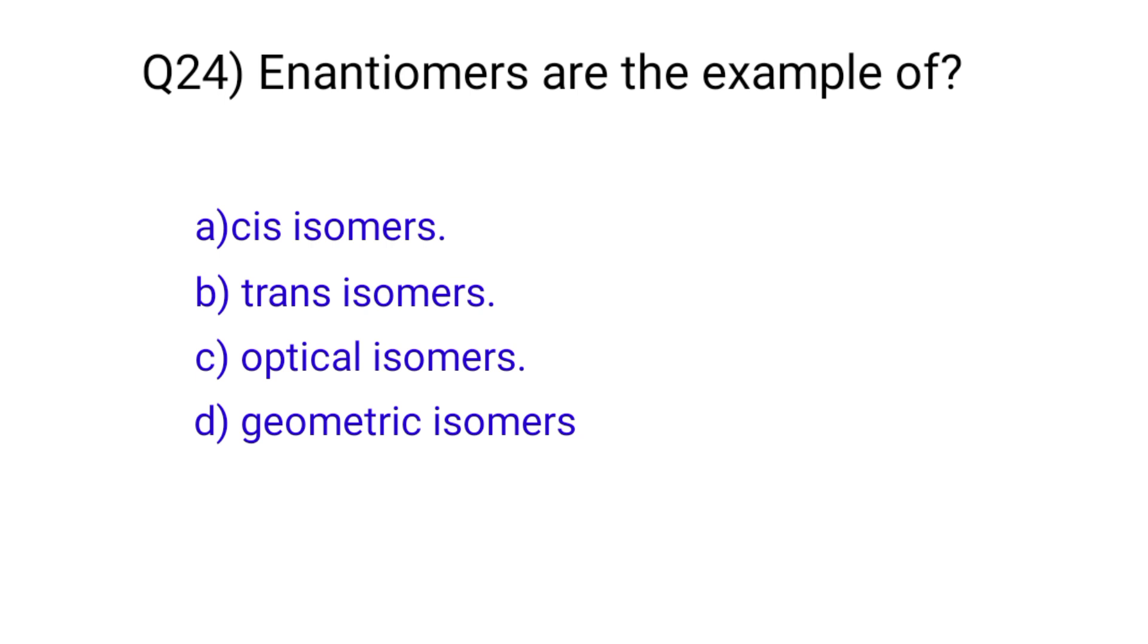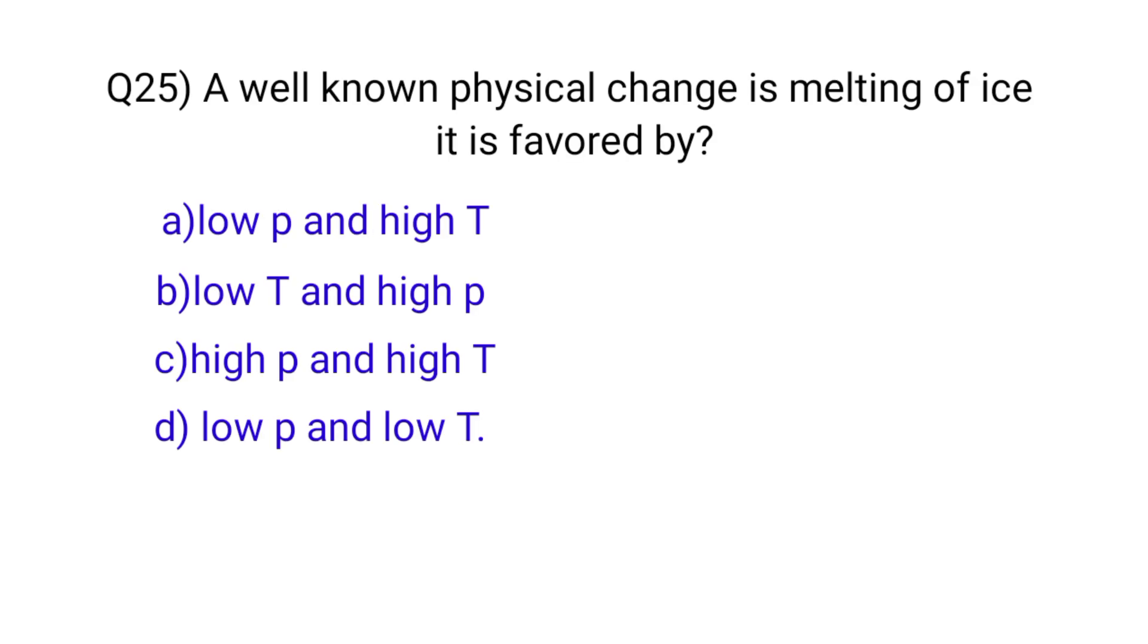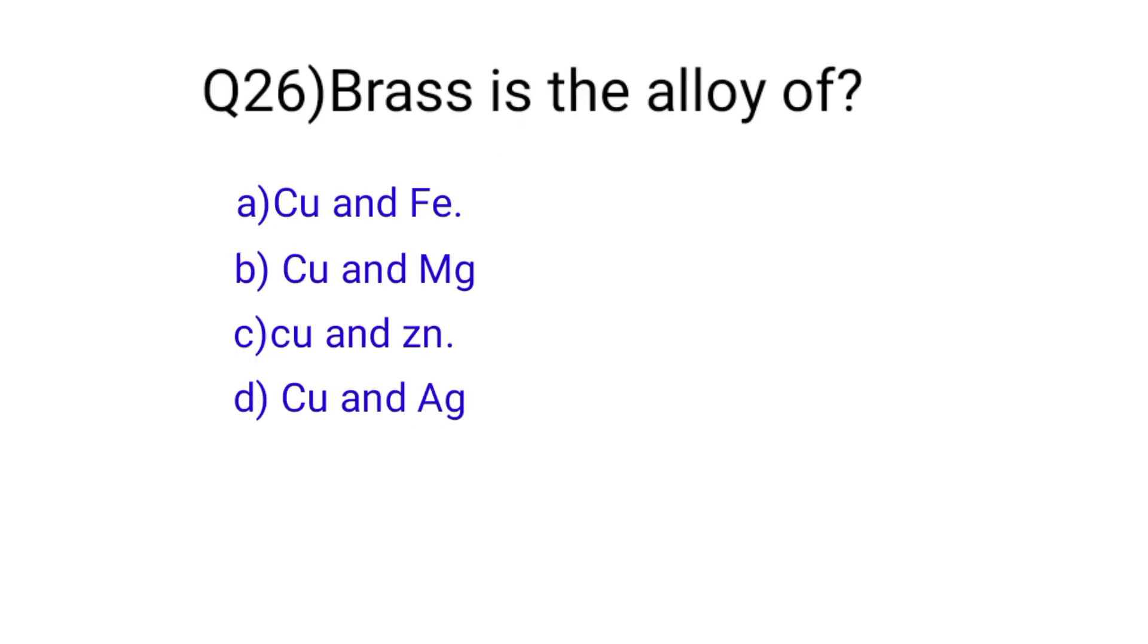Question number twenty-five: a well-known physical change is melting of ice. It is favored by? The correct option is A, low pressure and high temperature. Question number twenty-six: brass is the alloy of? The correct option is C, copper and zinc.